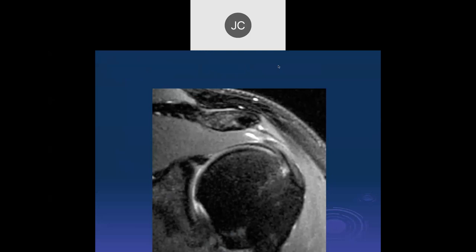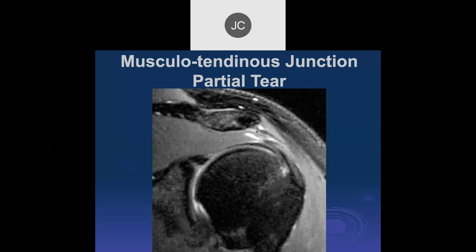Let's continue from where we left off last time — we're talking about partial tears. Looking at the supraspinatus tendon, is there an interstitial footprint tear? We can see a little bit of signal right in through here, and this was a partial tear involving the distal muscle right at the musculotendinous junction. These aren't that common.